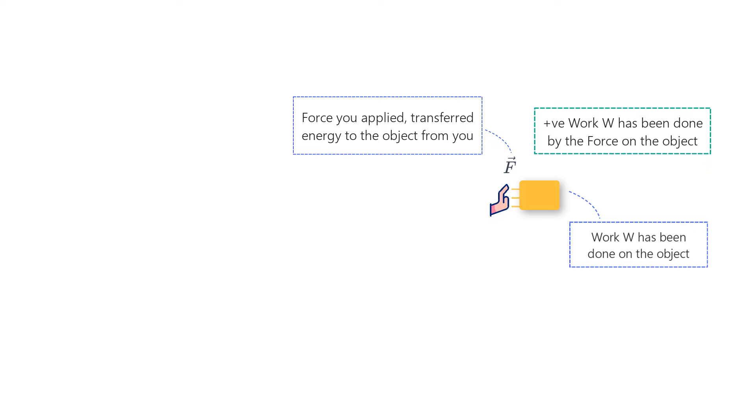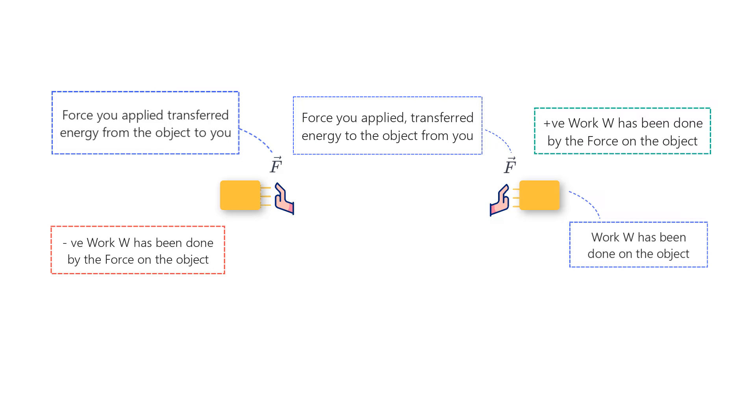And we say positive work has been done by the force on the object. However, if you decelerate the object to a lesser velocity by applying a force, you are decreasing the kinetic energy of the object and energy from the object is getting transferred to you. And since this reduction in kinetic energy of the object is happening on account of this force, we say that this force is doing negative work on the object.